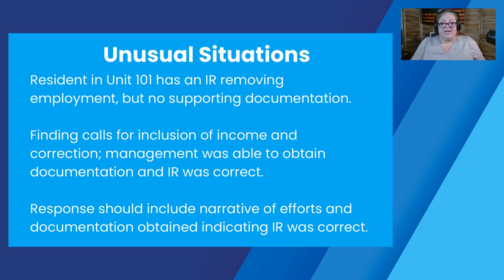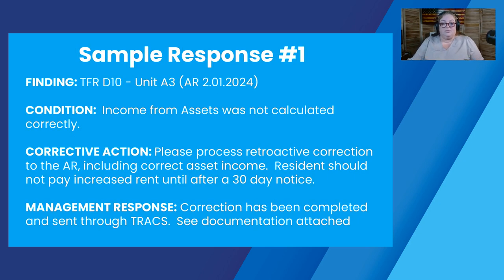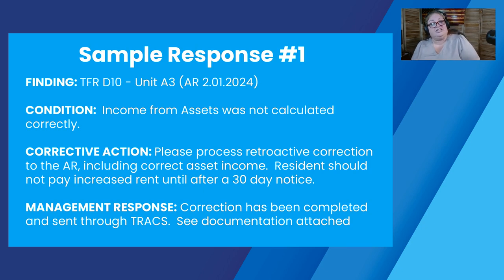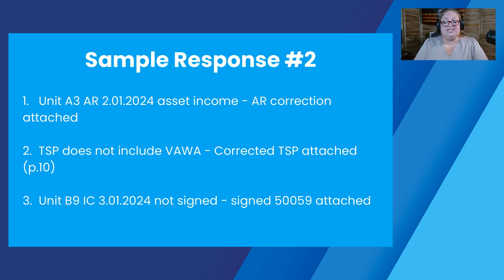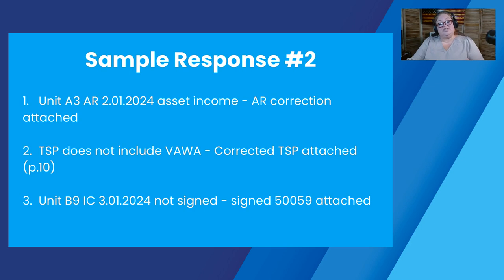Here are some sample responses. In this case, income from assets was not calculated correctly and the corrective action was to process a retroactive correction to the AR. The management response is: correction has been completed and sent through TRAX — see documentation attached. They opted for restating the finding condition and corrective action. Here's another sample — they just listed the finding and advised of what documentation was attached: Unit A3, annual recertification from February 1st, 2024, asset income, AR correction attached. This is less detailed, but it still gives a list of what finding it was, what was done to correct it, and what documentation is included.